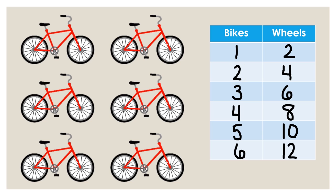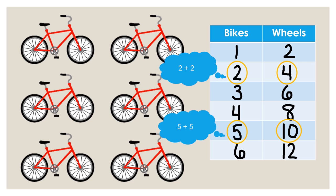Let me show you what I mean. If I double the two and think two plus two, I know that is the same as four. If I double the five and think five plus five, I know that is the same as ten. In each row of the table, there are twice as many wheels as there are bikes.